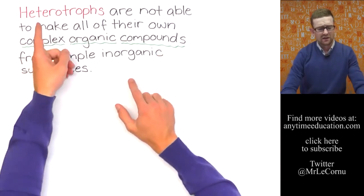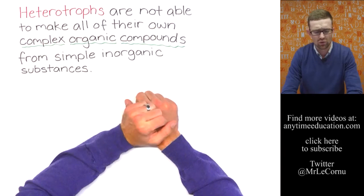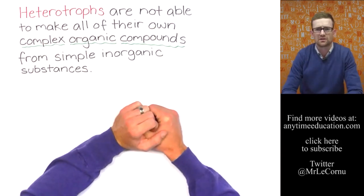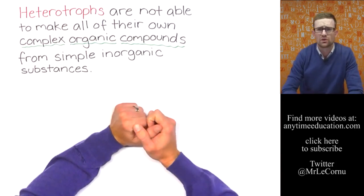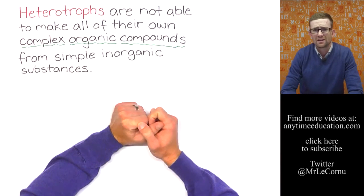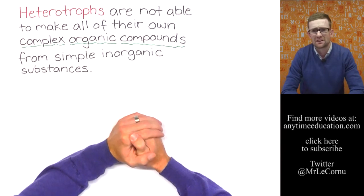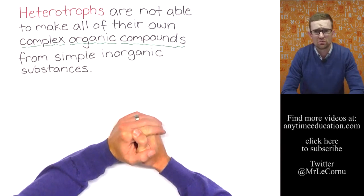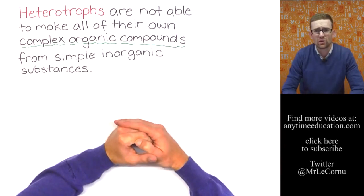Unlike autotrophs, heterotrophs are not able to make all of their own complex organic compounds from simple inorganic substances. So simply heterotrophs cannot make all of their own food and so to get the food or complex organic compounds they need to consume or eat or take in other living organisms or their products and that's why we call them consumers.